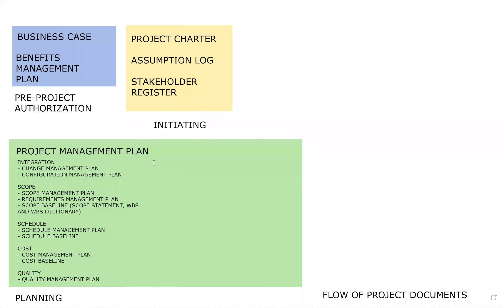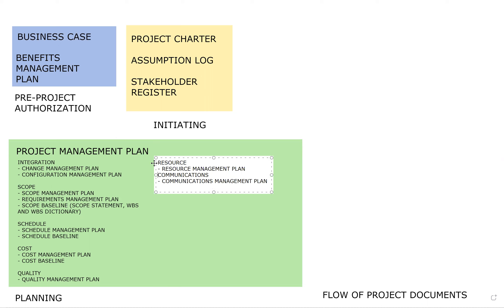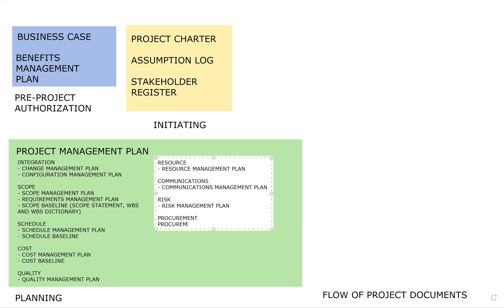Moving on to the final five knowledge areas. In resource management, we have our resource management plan. In communications, we have a communications management plan. In risk, we have a risk management plan. In procurement, we have a procurement management plan. And finally, in stakeholder, we have a stakeholder engagement plan.